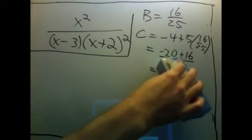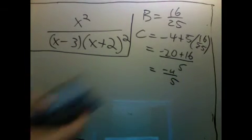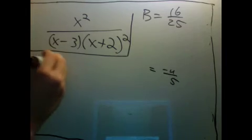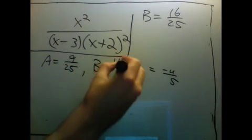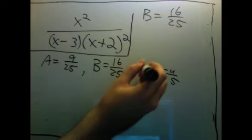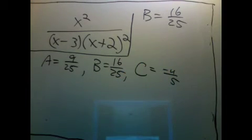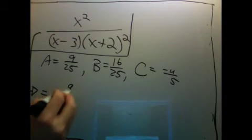Oops, this should have been 5. So I have a is 9 over 25, b is 16 over 25, and c is negative 4 over 5.